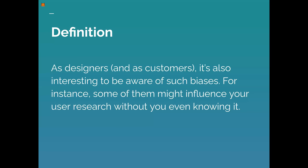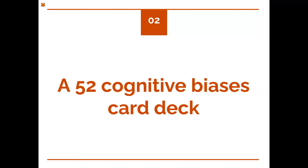As designers, it's interesting to see these things as customers too. Being aware of biases is really valuable, and some might influence your user research even if you don't know about them, or influence how you behave with others in teams — especially remote teams. We decided that not all 100+ biases apply specifically to UX design, so we took 52 of them and created a card game to help people understand their own biases and communicate them with the rest of the team.